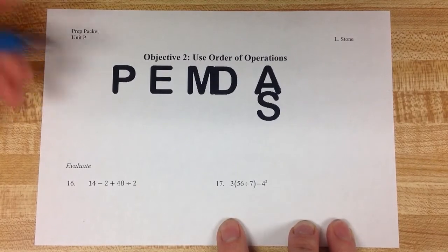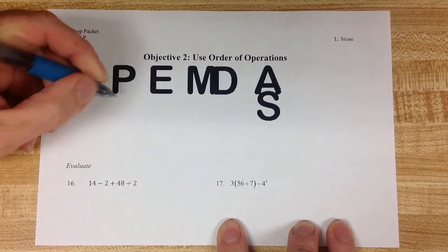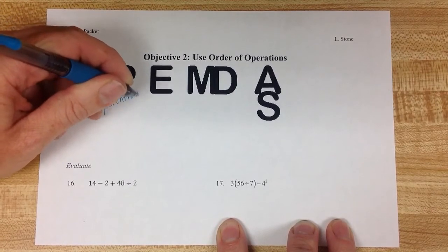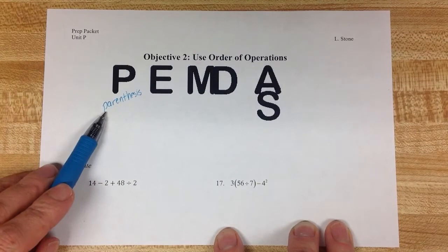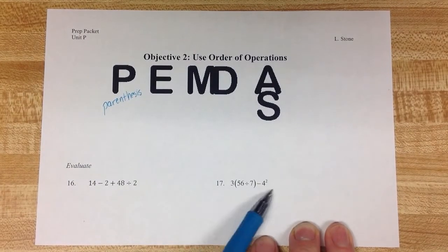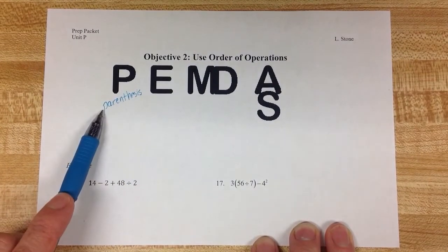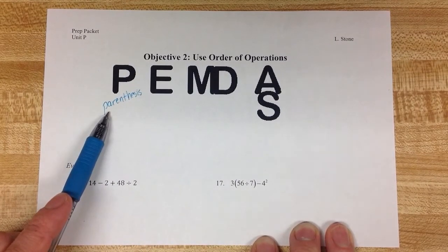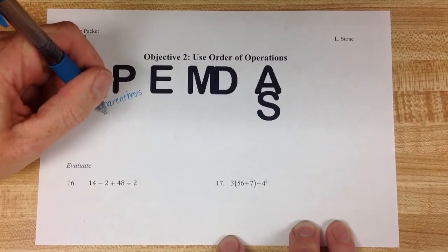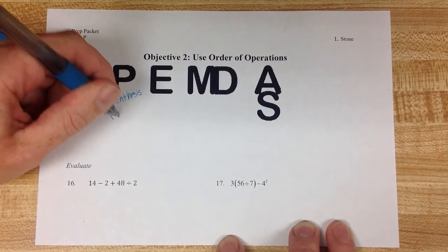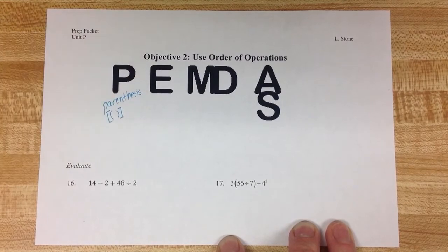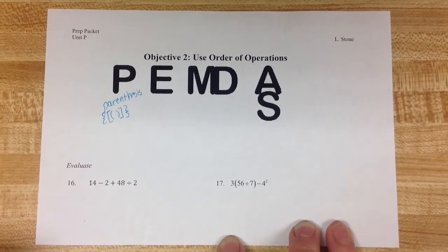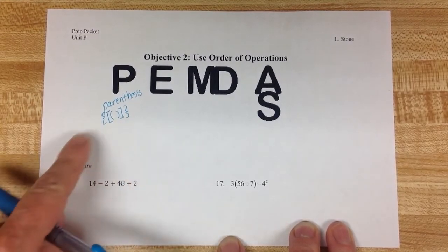The P in PEMDAS stands for parentheses. When we're looking at a problem that has lots of different operations happening in it, the parentheses is going to tell us what math we're supposed to do first. Parentheses can also be brackets, so the ones with the hard edges, or braces. Those are all three considered to be part of the groupings under parentheses.